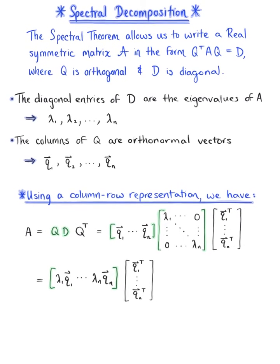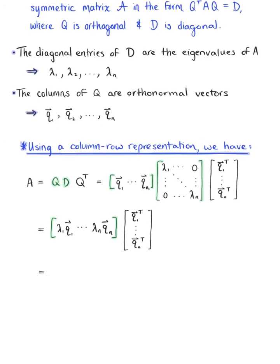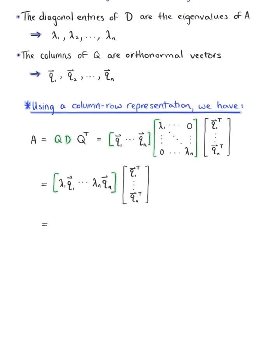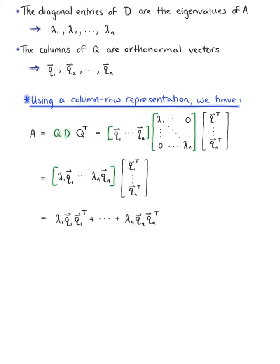Computing this final product, we are left with the linear combination lambda sub 1 times vector Q sub 1 times the transpose of vector Q sub 1, plus all the way up to lambda sub n times vector Q sub n times the transpose of vector Q sub n.